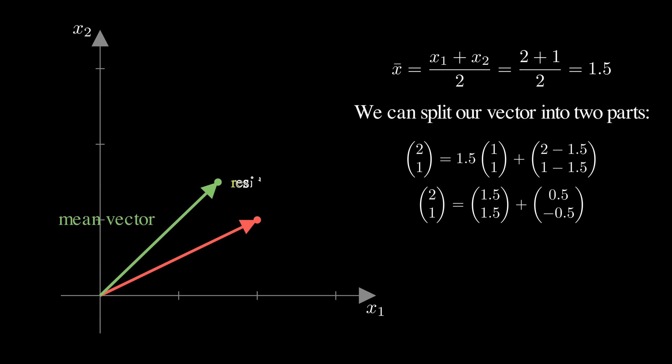Notice how the residual vector starts exactly where the mean vector ends, and when you follow the path from the origin through the mean vector and then through the residual vector, you arrive right back at our original data point. This decomposition always works, no matter what data you have.